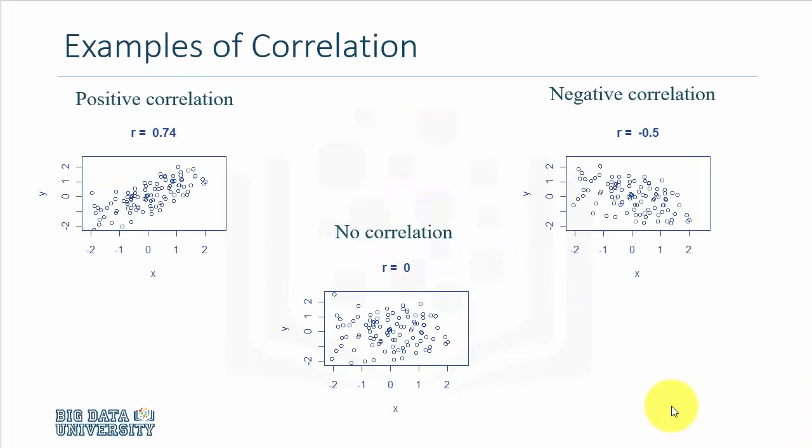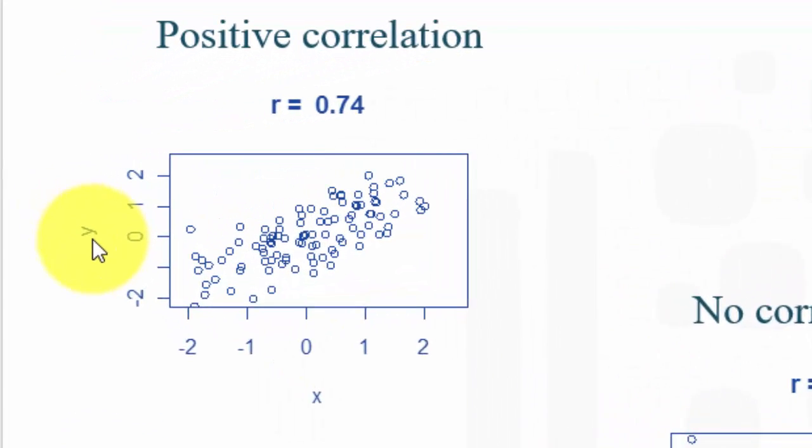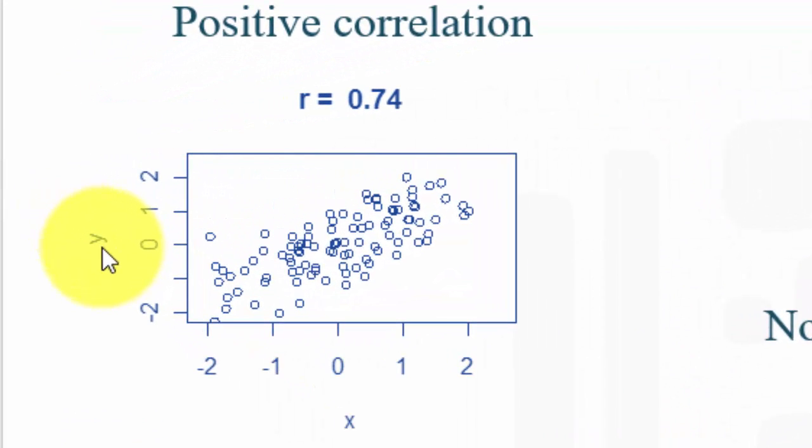More important than the mathematical notation is to understand what correlation means. Let's say you have two variables, x and y, and they are positively correlated and we computed the correlation coefficient, it's 0.74.